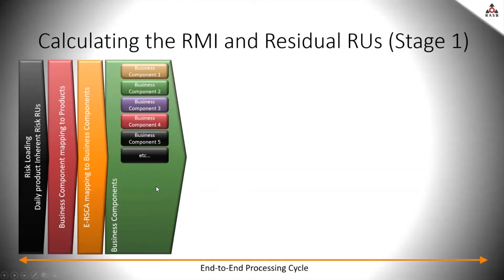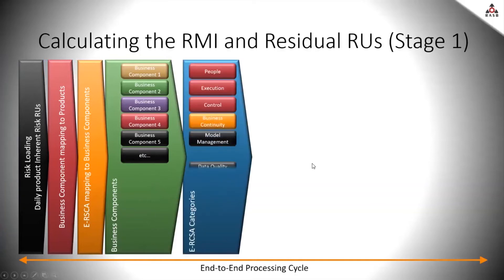These are just examples. There can be as many business components as there could be in an operational process. The fewer, the better, of course. Then we have the enhanced risk and control assessment categories, out of which the main or the most important ones we usually see are people, execution and control. But there also could be business continuity, model management, data quality management, etc.